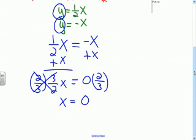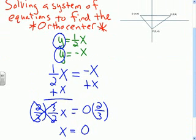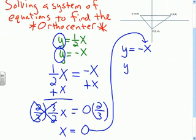Alright, so that's what x is. Now I can go back up here and I can take one of my equations. I'm going to take this one right here, y equals negative x, and I'm going to substitute in the value for 0 for x right there. So y equals negative 0.